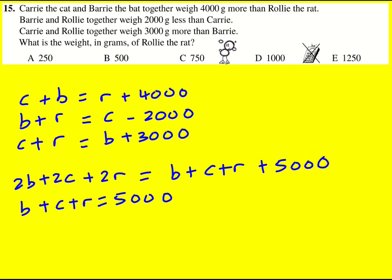So once I've got that, I'm nearly there. I'm trying to work out R, so I'm going to take the first equation. Let me do it in a different color—so B + C, now I'm going to subtract R, and that's going to equal 4,000.